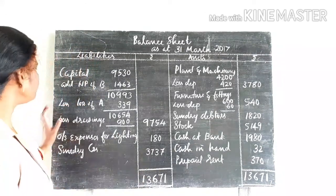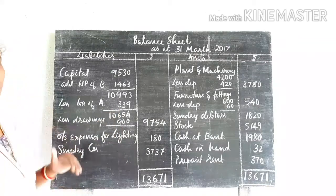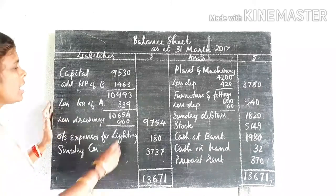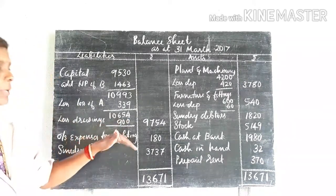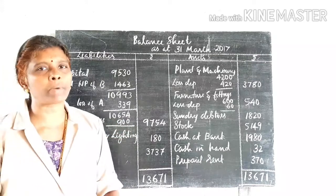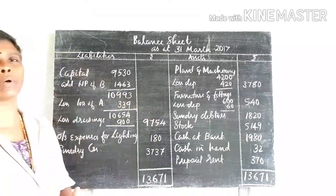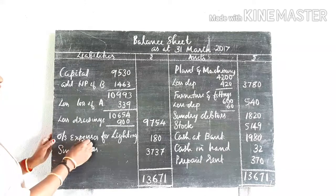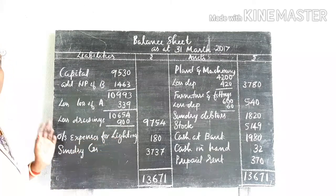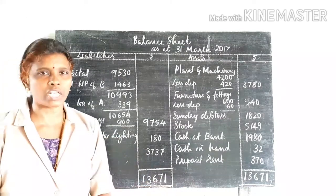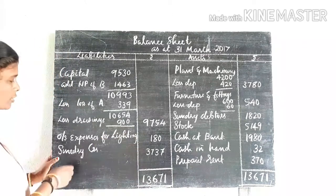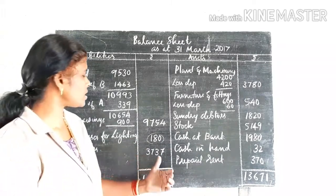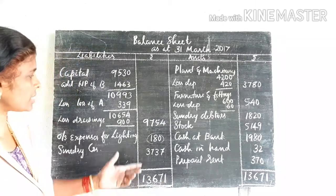Next item on the balance sheet: capital of 9,530 rupees, add net profit, then minus drawings of 900 rupees. Outstanding expenses for lighting and heating: 180 rupees is added as a current liability. Sundry creditors: 3,737 rupees.